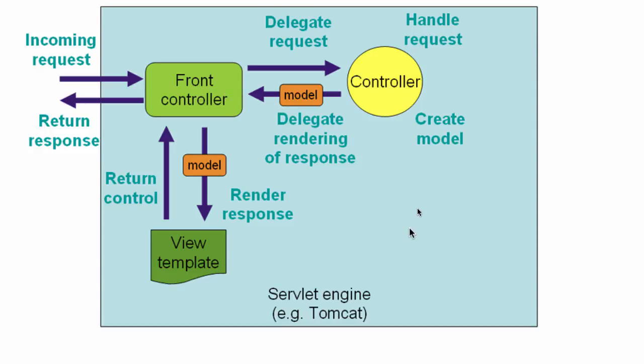The front controller then makes use of the view resolver. It goes to the view resolver and says there is something called 'login' — I want to find out what the JSP for this is. The view resolver tells the front controller that the JSP is /WEB-INF/views/login.jsp. The front controller then executes the view template and returns the response back.